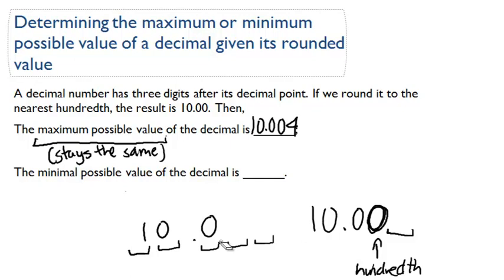Now, what about the minimum possible value? This is asking me to figure out when would I round up. What would the lowest number be for me to round up to get 10.00?